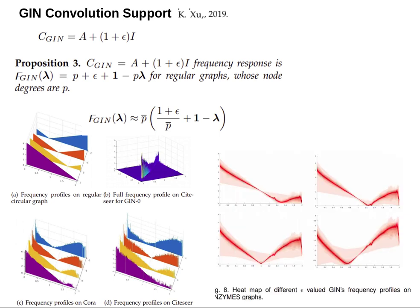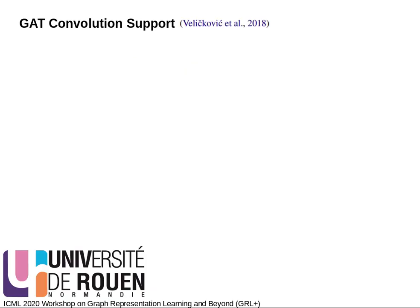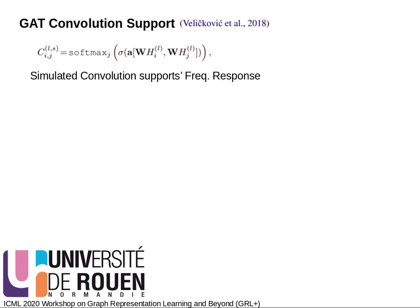We did the same for Enzymes and Proteins graph dataset as shown in the figure. Graph attention network does not have fixed convolution support, it tries to learn convolution supports by attention mechanism. That is why we cannot calculate its frequency response theoretically.